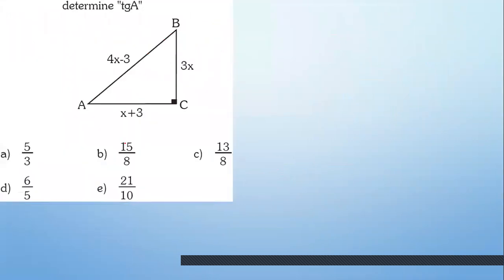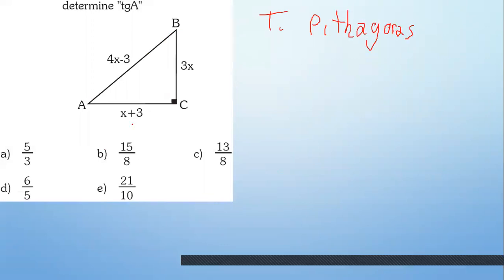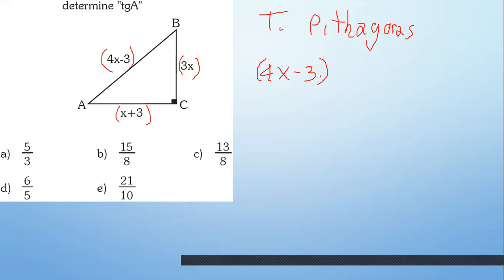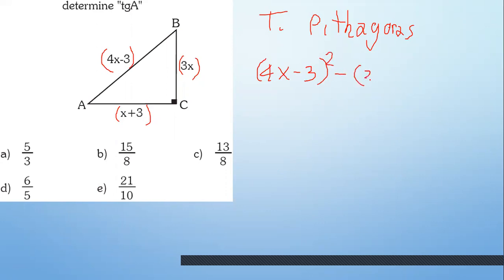Recuerda que si tienes preguntas, puedes parar y decirme. En el siguiente problema, ¿qué recomienden? Un triángulo rectángulo. Recuerda el teorema de Pitágoras. ¿Pero qué tal si haces lo contrario? Para hallar un lado, haces el cuadrado de la hipotenusa menos el cuadrado del otro cateto. Entonces, ¿qué harías? Tendrías 4x menos 3. Haz diferencia de cuadrados porque sé diferencia de cuadrados.